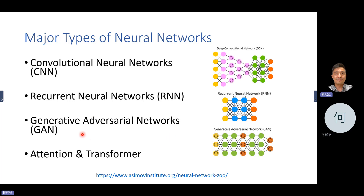And then the most popular network now: the generative adversarial network, which contains two parts — the generative part and adversarial part — and then the attention and the transformer.